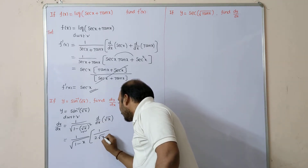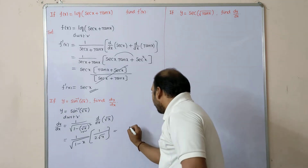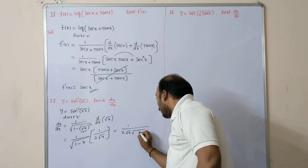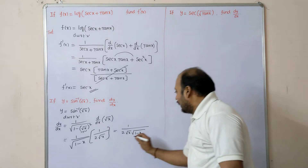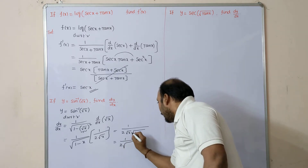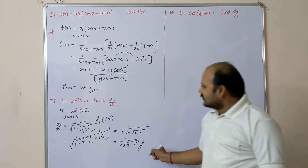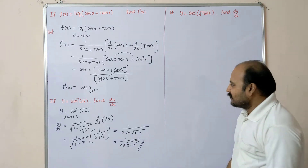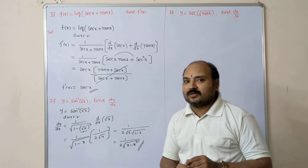So dy/dx = 1/(2√x) · 1/√(1 − x). We can leave it like this or simplify further: 1 / [2√x · √(1 − x)], which equals 1 / [2√(x(1 − x))]. Either form is acceptable.